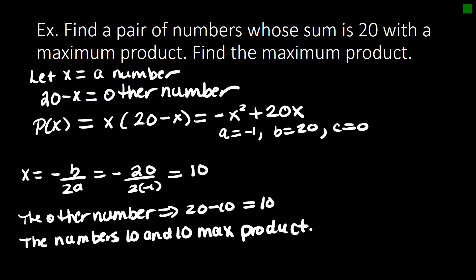So that's not really what the problem asks us. The problem asks us to find the maximum product. So since 10 and 10 maximize the product, then the maximum product is 10 times 10 which is 100. So it's very important to read what the problem is actually asking for.